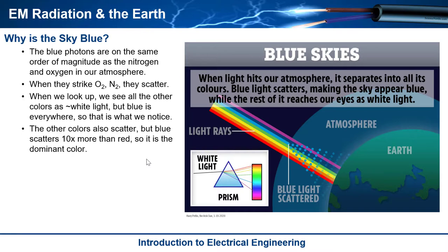And the answer is yes, everything does scatter. The wavelength of blue, it just happens to be more on the scale of the size of oxygen and nitrogen in the atmosphere than the other photons. So it scatters more. So it scatters 10 times more than red, which is at the very end of the visible spectrum.